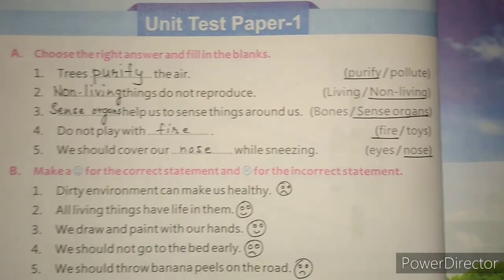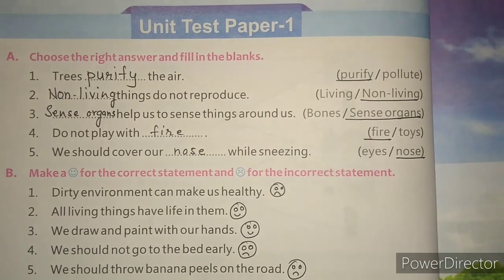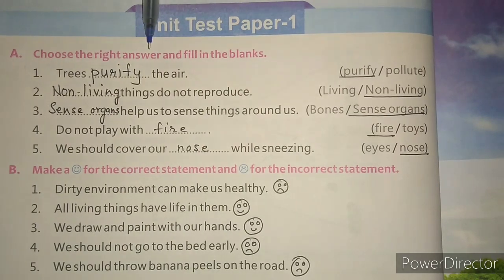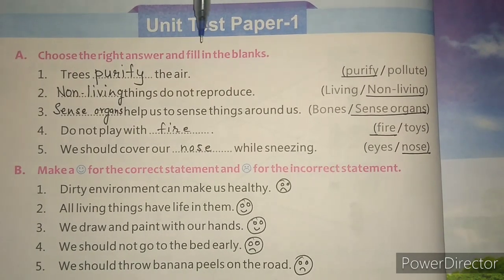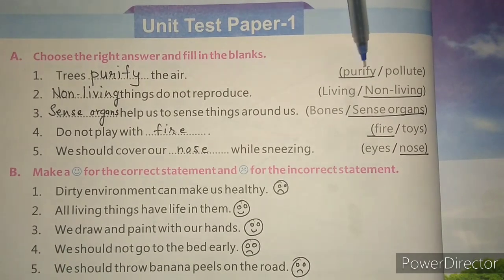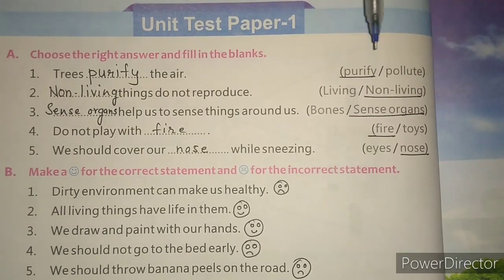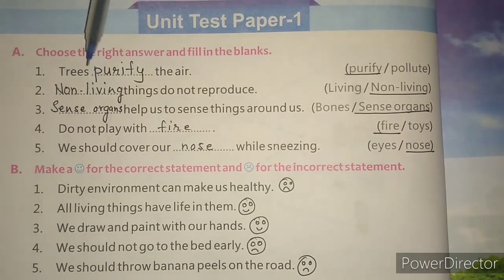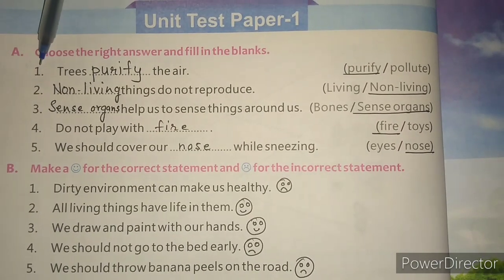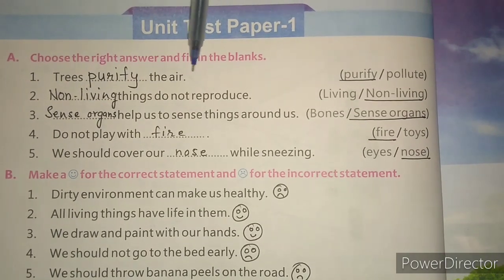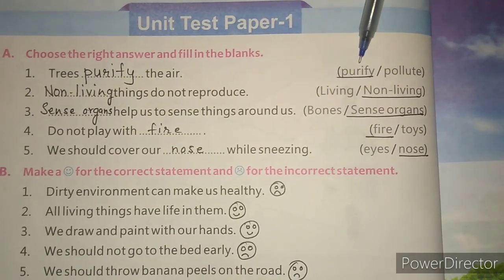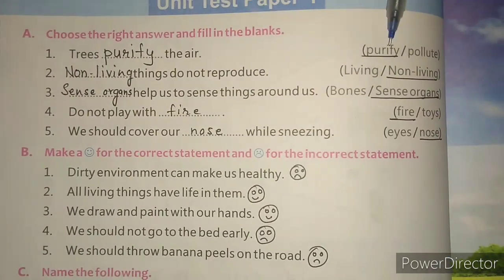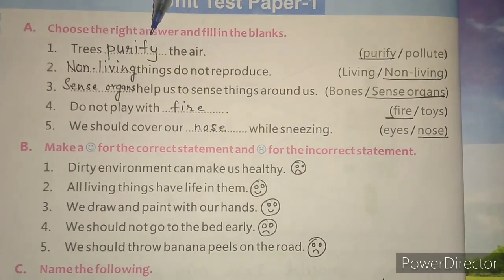Now let's do this exercise also — this covers lessons 1 to 5. Exercise A: Choose the right word and fill in the blanks. Question 1: Trees dash the air — options are purify or pollute. The correct answer is purify. Trees purify the air. Question 2: Dash things do not reproduce — living things or non-living things? The correct answer is non-living things do not reproduce.